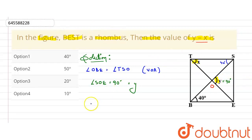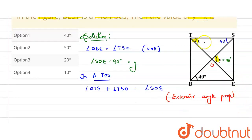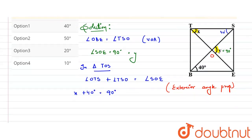Now, if we consider triangle TOS: angle OTS plus angle TSO equals angle SOE — by the exterior angle property. The exterior angle property states that the sum of two interior angles of a triangle equals the exterior angle. So, angle OTS is x degrees, and angle TSO is 40 degrees as seen in the figure. Therefore, x plus 40 equals angle SOE, which is 90 degrees.